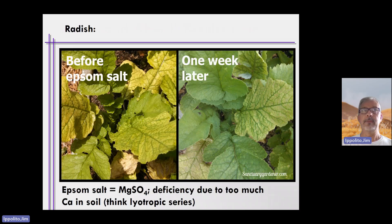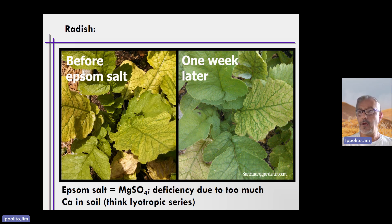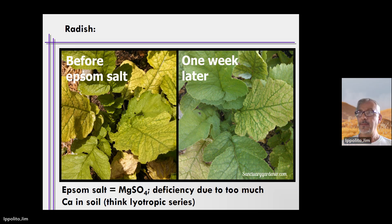Here's another example: radish suffering from a magnesium deficiency. On the left, before someone added Epsom salt (magnesium sulfate), you can see the deficiency. One week later the plants are starting to clear up, overcoming the deficiency. Thinking about the liotropic series, the problem was too much calcium and not enough magnesium. By adding just enough magnesium to displace some calcium off the exchange sites, you replace calcium with magnesium and create a buffer or source of magnesium to feed the plants.